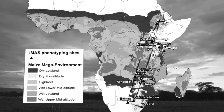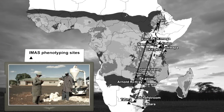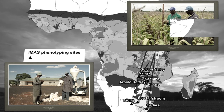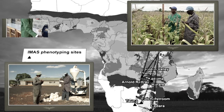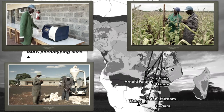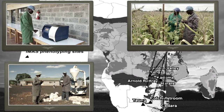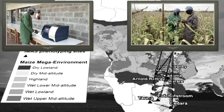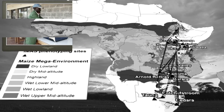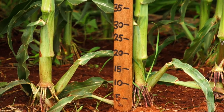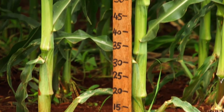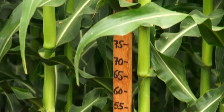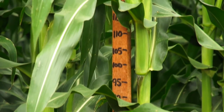When running collaborative multi-location trials, it is important that all collaborators collect data using the same methodology. This allows researchers to combine datasets and compare locations objectively. In this video, we highlight the key traits that are routinely collected in optimal and nitrogen-stressed maize trials and demonstrate how data should be collected and recorded.